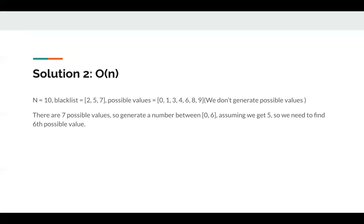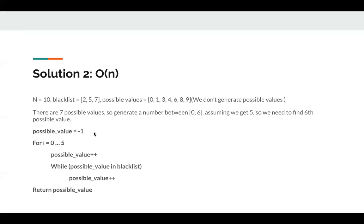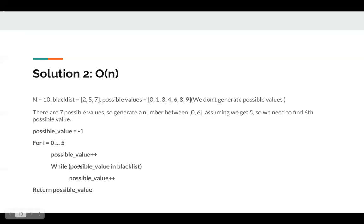The probabilities of those values are not the same. So we have seven possible values and need to generate a random number in that range. Assuming we get 5, we need to find the 6th possible value, which is 8 in this case. The algorithm iterates from 0 up to the random number generated, finding the next valid value each time — skipping blacklisted ones with a while loop. It returns 8. It's slow because for large random numbers, we almost need to check each number we see.